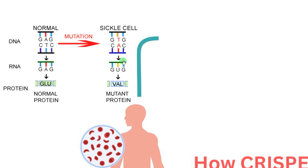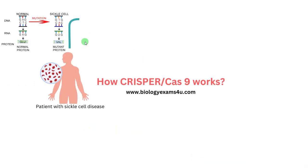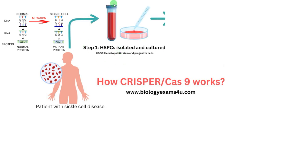So if the single base is corrected or replaced with the correct base, this disease can be cured. We have divided the entire procedure into steps. Step 1 is HSPCs are isolated and cultured. HSPCs are hematopoietic stem and progenitor cells — simply precursor cells that are capable of dividing and differentiating to form all types of blood cells. So this is cultured.